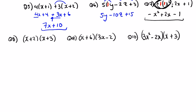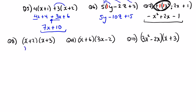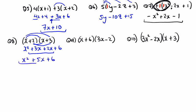Here we go: x by x is x squared. Draw the lines if it helps. X by plus 3 is 3x, 2 by x is 2x, and 2 by plus 3 is plus 6. We can see like terms in the middle: we have x squared plus 5x plus 6, and this is our answer.